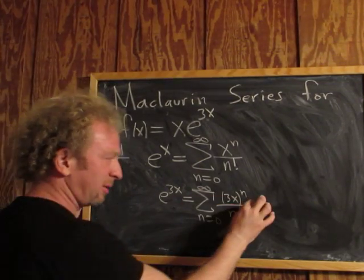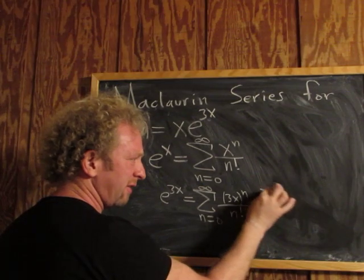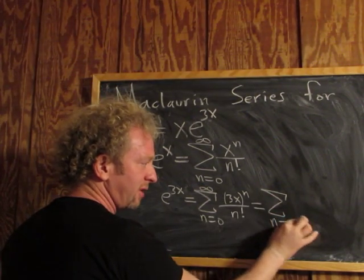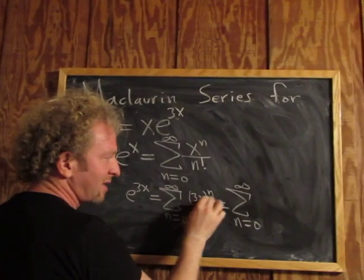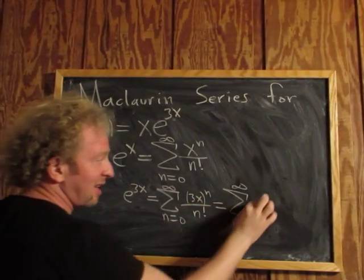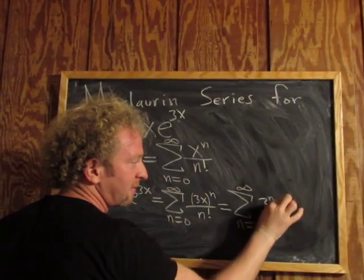Here we can clean this up a little bit. This is equal to the infinite sum as n runs from 0 to infinity. 3x to the n, that's 3 to the n times x to the n using properties of exponents.